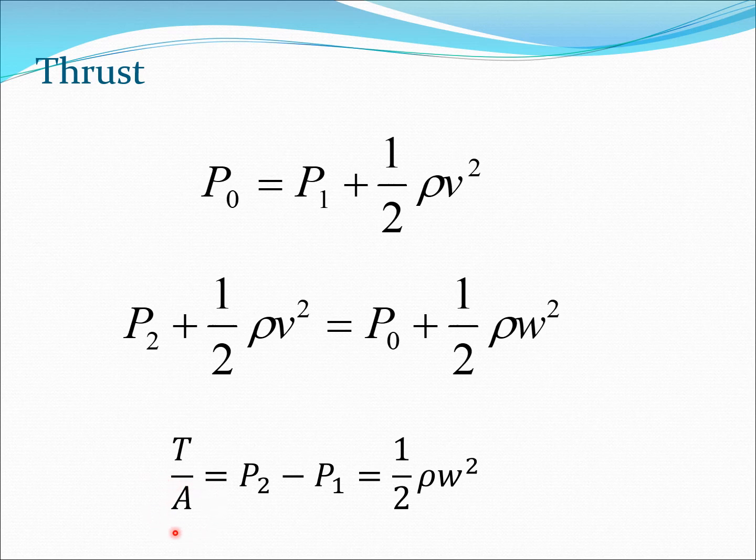If we take these two equations, let me take p0 in the first equation and put it in the second equation here. Then I can get p2 - p1. The 1/2 ρv² terms will cancel out, so I will get p2 - p1 = 1/2 ρw².